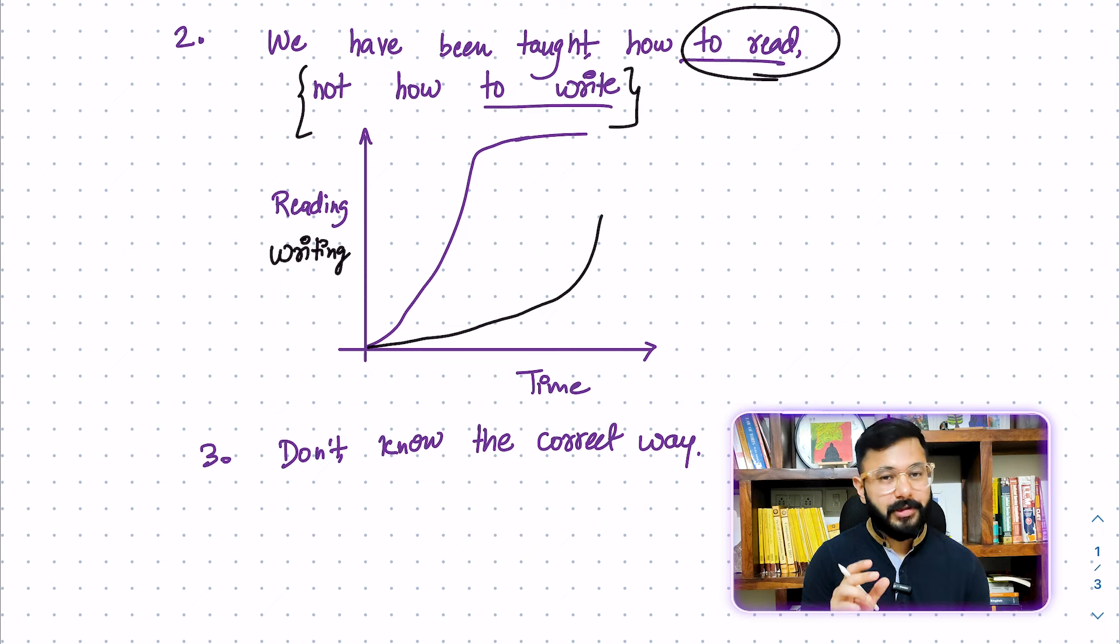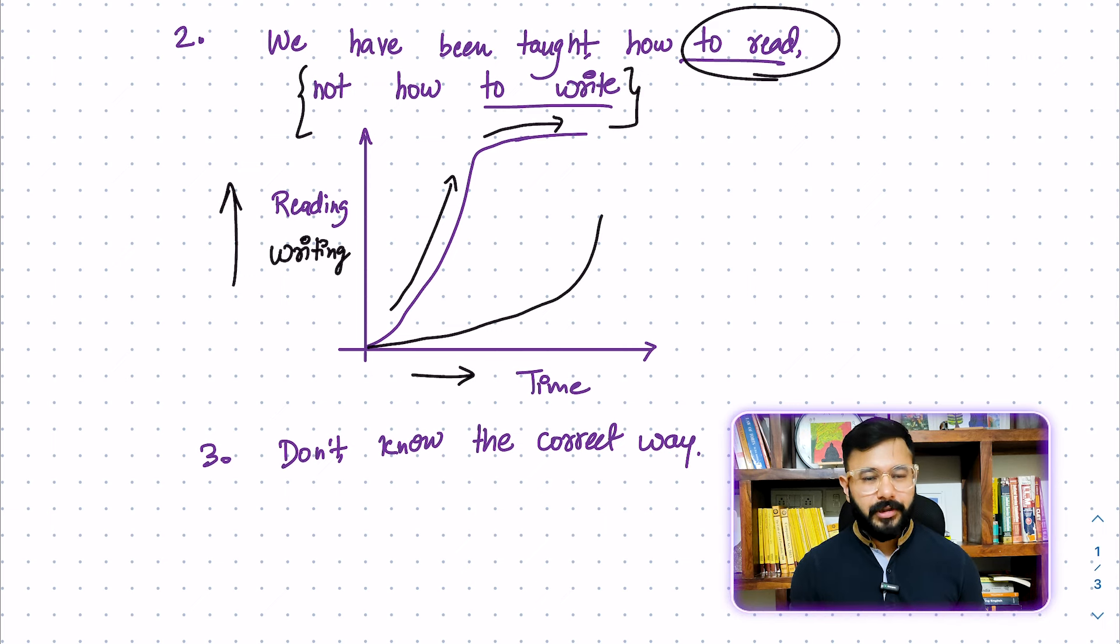Now, what happens if you put it on the graph? How does it look like? This is also very interesting. Now, on the x-axis, you can see time and on the y-axis, you can see reading as well as writing. So as you grow in time, as you move from school to college, you keep reading more and more. And of course, it plateaus after a while or grows slowly because you've read a lot and now a lot of other things are also happening. It might also be a continuous growth of reading as well.